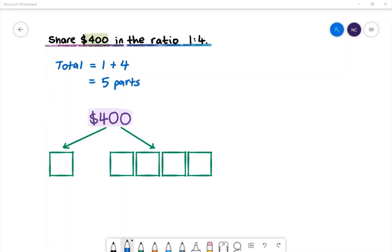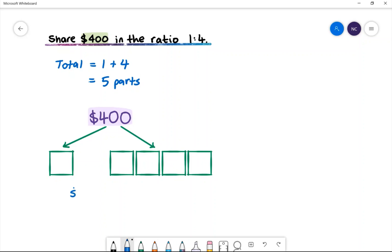In this diagram, we can see that we want to share $400 into 5 equal parts. One share will be 1 part, the other share will be 4 parts. To find out how much 1 part is worth, we can do $400 divided by 5 parts. We will then get $80. Each part is worth $80.